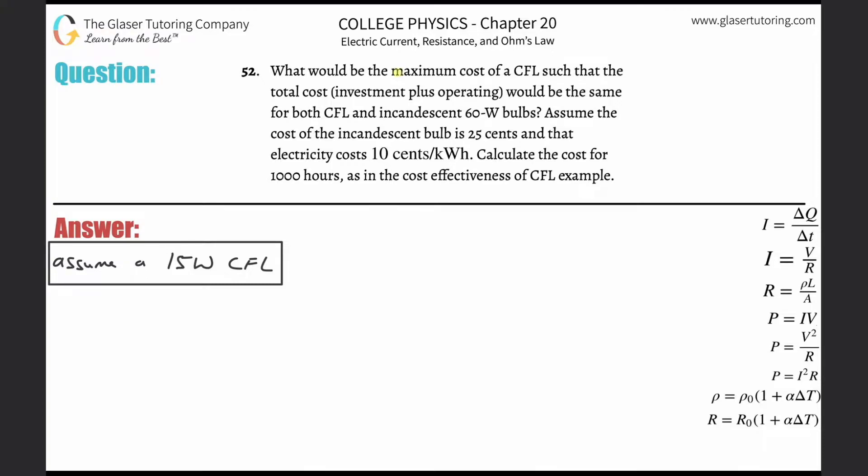Number 52. What would be the maximum cost of a CFL such that the total cost, meaning the investment plus the operating cost, would be the same for both CFL and incandescent 60-watt bulbs? Assume that the cost of the incandescent bulb is $0.25 and that electricity costs $0.10 per kilowatt hour. Calculate the cost for 1,000 hours.